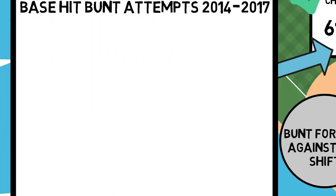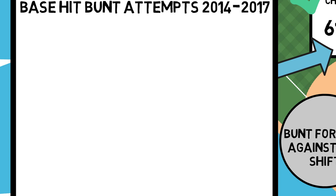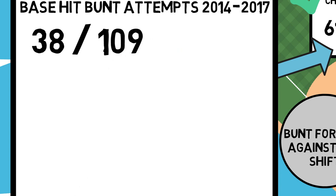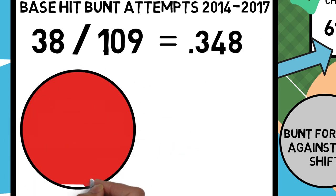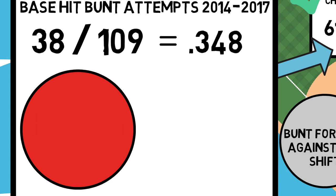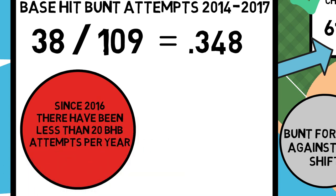Now, as I said, we've been focusing on sack bunts. But what about bunting for a hit? In an article looking into this same idea, there were a total of 109 base hit bunt attempts from 2014 through 2017. Of that, 38 of those attempts turned into hits, marking a .348 batting average — meaning when guys who can bunt for a hit do, they're pretty successful at it. But you must also note that just over 100 attempts over the course of four years is not a significant amount of tries. Since 2016, we have not seen more than 20 true base hit bunt attempts in an entire season. Not only is the sacrifice bunt not being used frequently in the majors, but base hit bunting is becoming more rare as well.